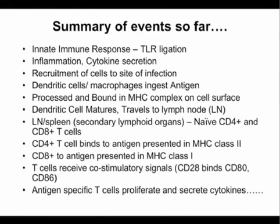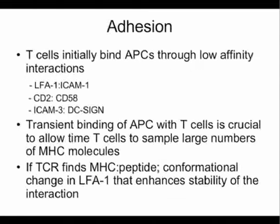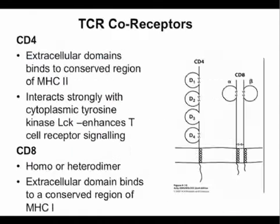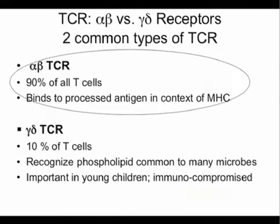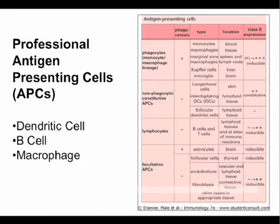A student asked about the mechanism of class 2 induction in cells that wouldn't normally present antigen — whether it's similar to the mechanism in normal APCs. The answer: there are a number of transcription factors, like one called class 2 transactivator, that regulate the expression of MHC class 2 molecules. If this gets activated — for example, interferon gamma can activate this transcription factor — that causes the upregulation of class 2 molecules. It's mostly inflammatory signals that cause the upregulation of these molecules.